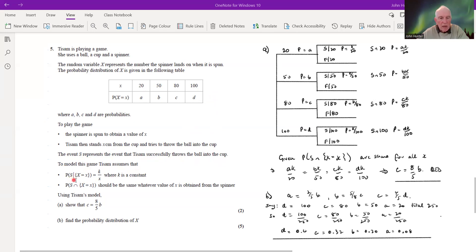To model this game, Tisam assumes that the probability of success given that the random variable is x, which of course could be 20, 50, 80, or 100, is equal to k divided by x. So we can see as x is getting bigger, that probability is getting smaller.